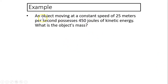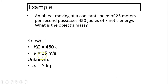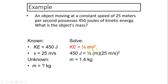Let's take a look at an example. An object moving with a constant speed of 25 meters per second possesses 450 joules of kinetic energy. What is the object's mass? Given: KE = 450 joules, v = 25 m/s. Using KE = ½mv²: 450 = ½ × m × 25², solving gives m = 1.4 kilograms.